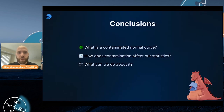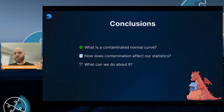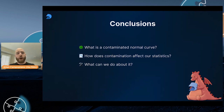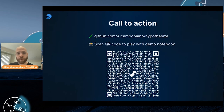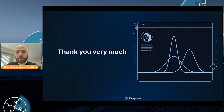So, conclusions. What is a contaminated normal curve? It's simply a mixture of a standard normal curve and another bell-shaped curve with the same mean where you increase the number of outliers — like mixing two curves, one without outliers and one with, both bell-shaped and centered at the same mean. How does contamination affect our statistics? Typically it leads to incredibly low power or wider confidence intervals. What can we do about it? I wrote a library that can help you conduct robust hypothesis tests. If you'd like to give me a star on GitHub, that would be wonderful. Point your camera at this QR code and you'll get a notebook exactly like the one I shared, so you can interactively learn about these things yourself. Thank you very much.